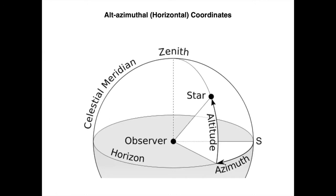The coordinates of a star in this system are given by two angles called altitude and azimuth. The altitude is the angle from the horizon to the star. The azimuth is the angle from the south point to the projection of the star: you pass a 90-degree arc from the zenith to the star, which intersects the horizon at a point, and from there to the south you measure the azimuth.